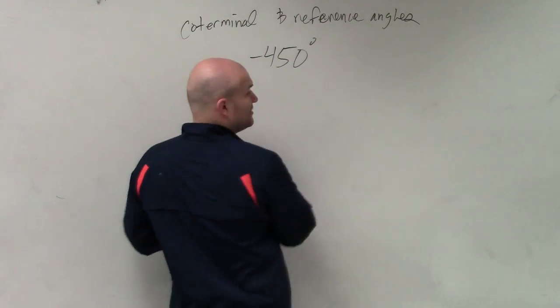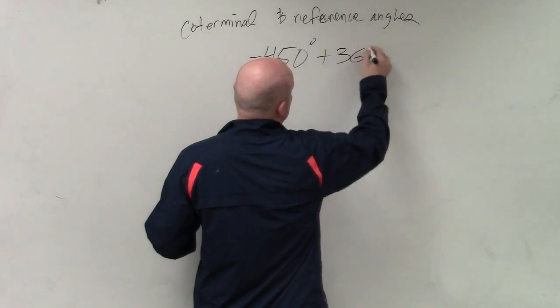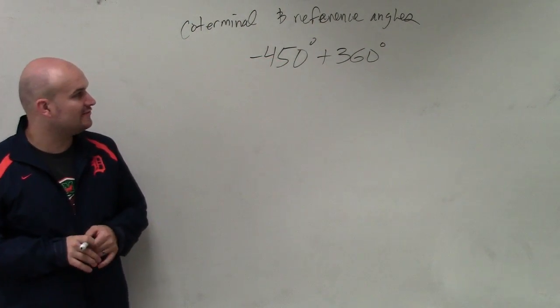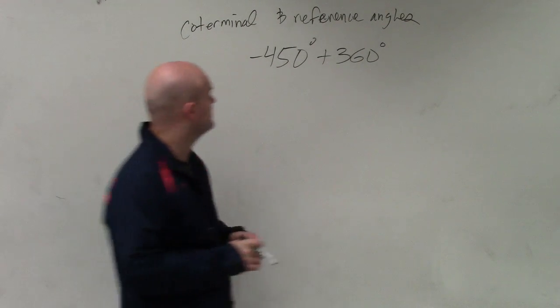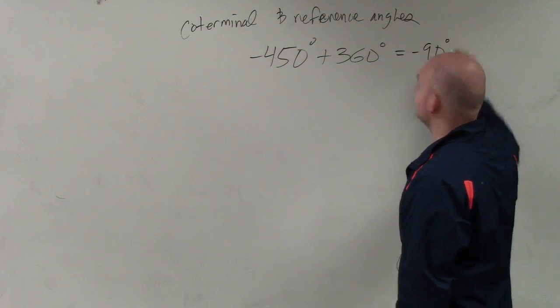So to find a coterminal angle, we just add and subtract 2 pi, or 360. So let's add 360 degrees to find a coterminal angle. So if I hit negative 360, negative 450 degrees, and I add 360, I am going to be left with negative 90 degrees.